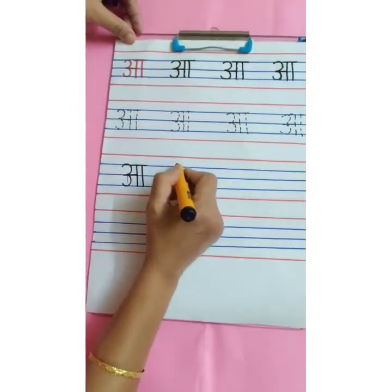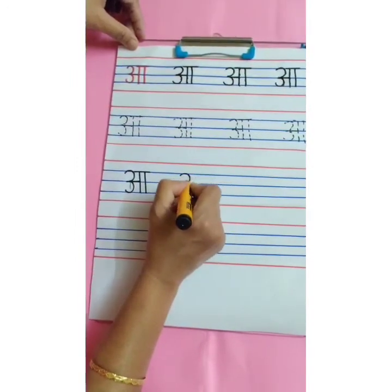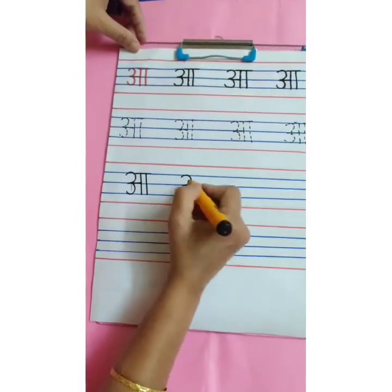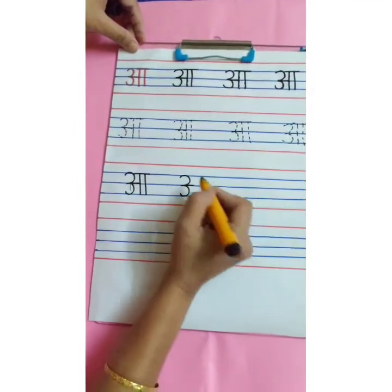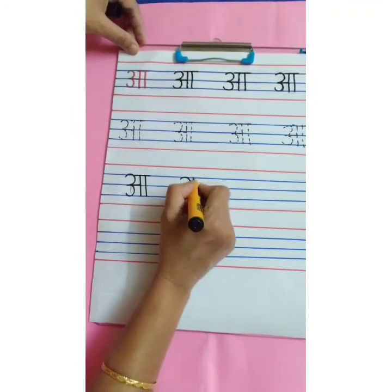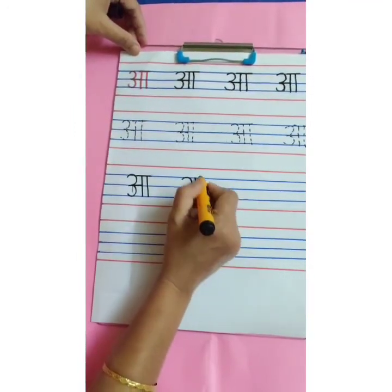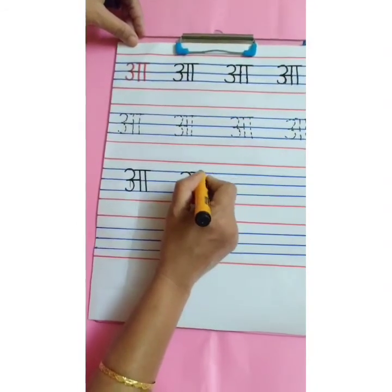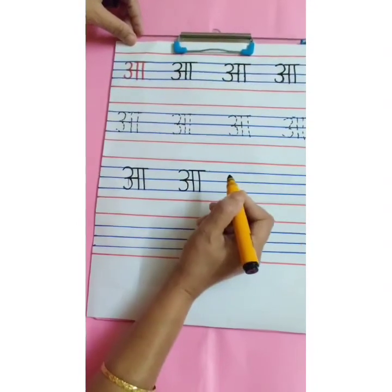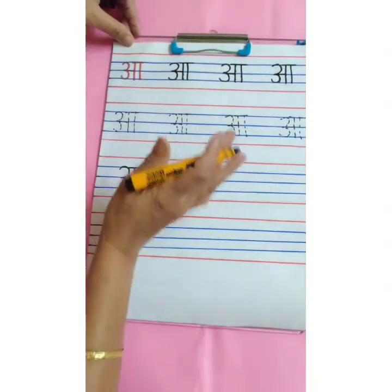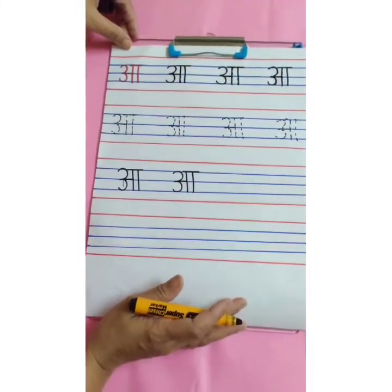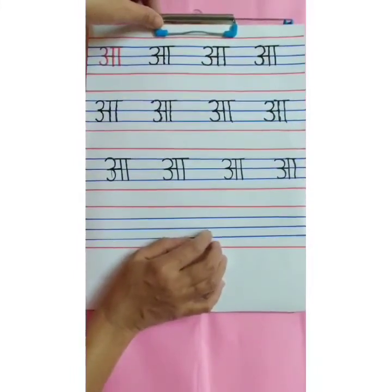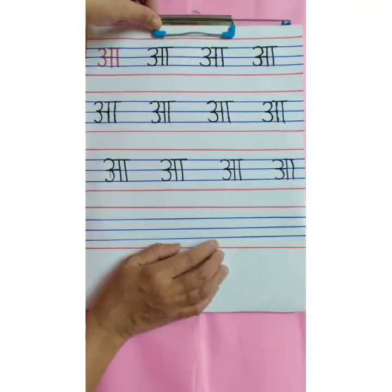One more time. Start with the first blue line, write number 3, then small slipping line, then standing line, then standing line, then one more standing line, and small slipping line overhead. This way you are going to complete your remaining page. After completing the work, your page will look like this.